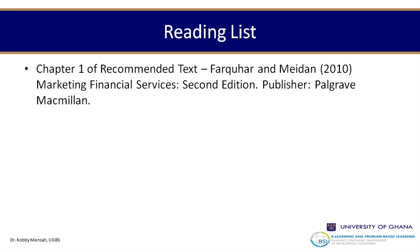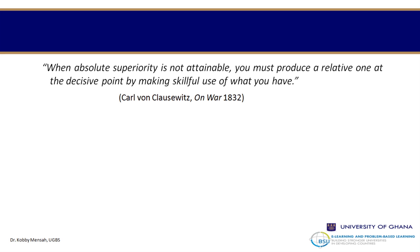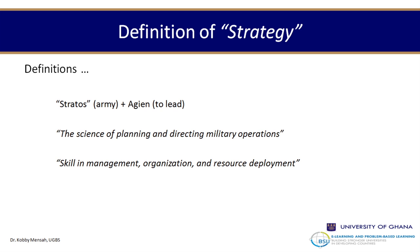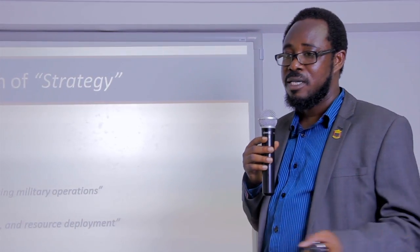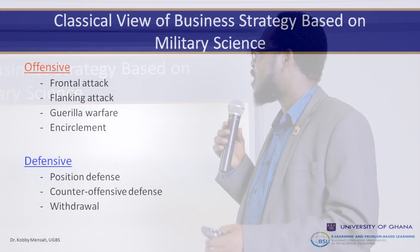As Carl von Clausewitz wrote in 'On War' (1832): 'When absolute superiority is not attainable, you must produce a relative one at a decisive point by making skillful use of what you have.' Regarding the definition of strategy, the word itself comes from the military — 'stratos' meaning army and 'agein' meaning to lead — encompassing the science of planning and directing military operations, skill in management, organization, and resource deployment.